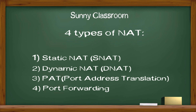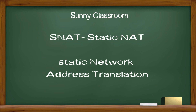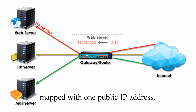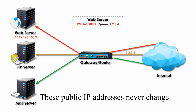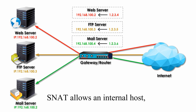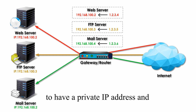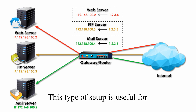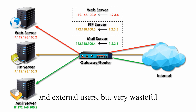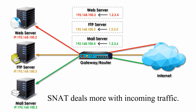Please let me explain them one by one. Static NAT, or SNAT, stands for Static Network Address Translation — a type of NAT where one private IP address is mapped to one public IP address. These public IP addresses never change, and that's why it is called Static NAT. SNAT allows an internal host, such as a web server, to have a private IP address and still be reachable over the Internet. This type of setup is useful for providing services for both internal and external users, but is very wasteful of expensive public IP addresses. SNAT deals more with incoming traffic.